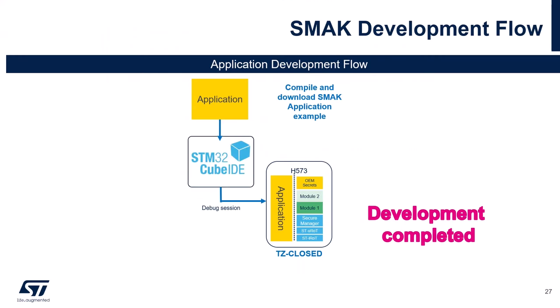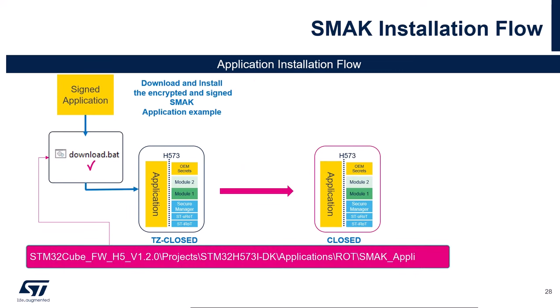Let's say that the development has been completed, our application has been tested, and we want to put the device in the field — moving from TrustZone closed to closed product state. But before putting the device in closed product state, we have to install the application properly. In TrustZone closed, the image signature is not verified to make development completely transparent for the user — the image is not signed when we download and debug using our IDE. But once we put the device in closed state, we need to have the image signed and properly installed with the image header metadata stored in Flash. To do that, we can use a ready-to-use download script which will properly install our current firmware image so that the ST Root of Trust will be able to verify the image at the next reset.